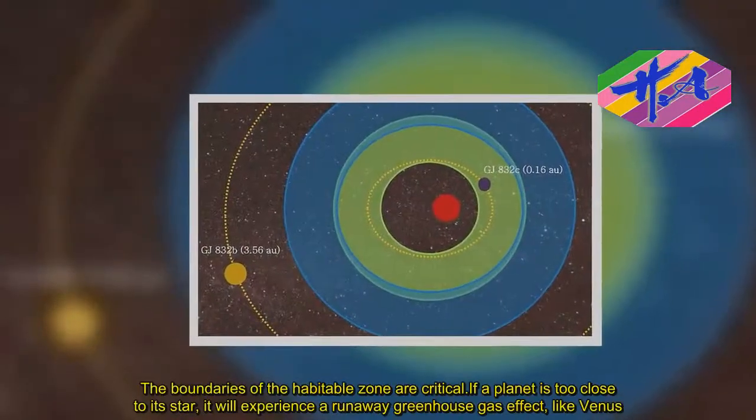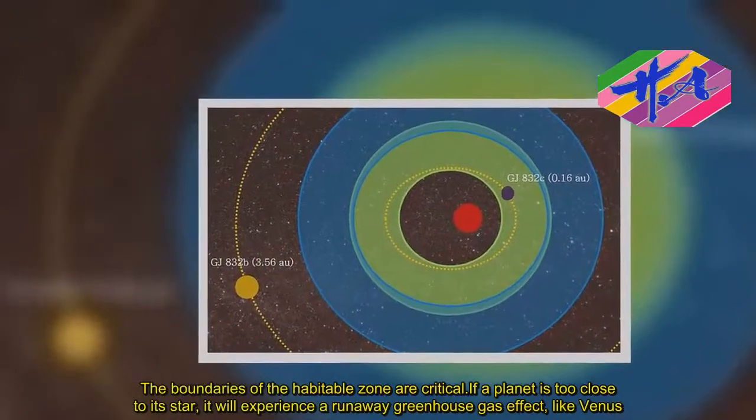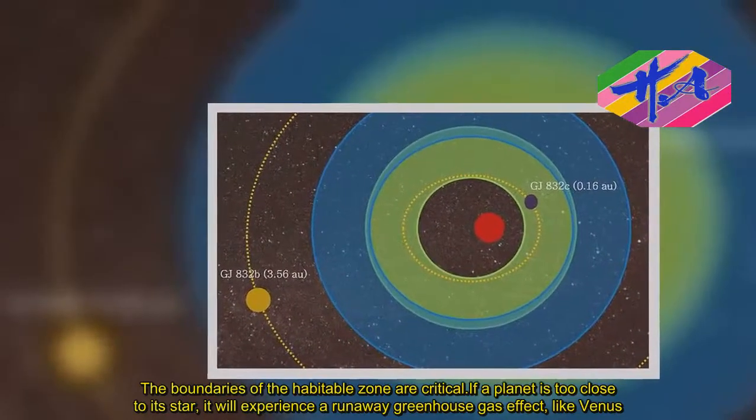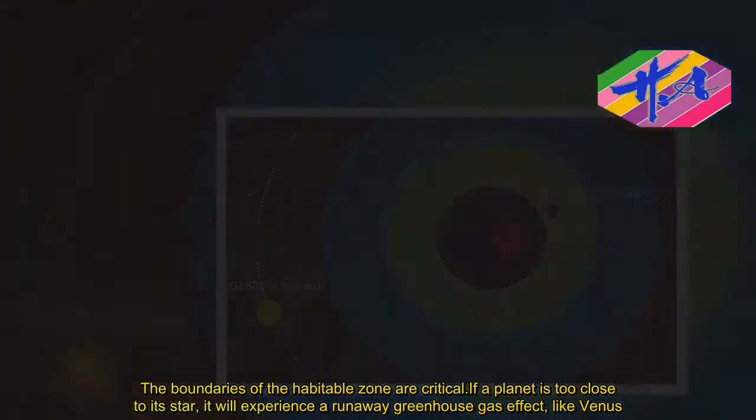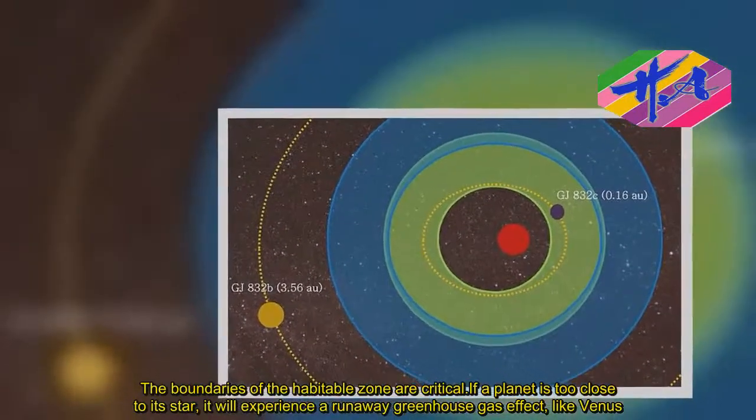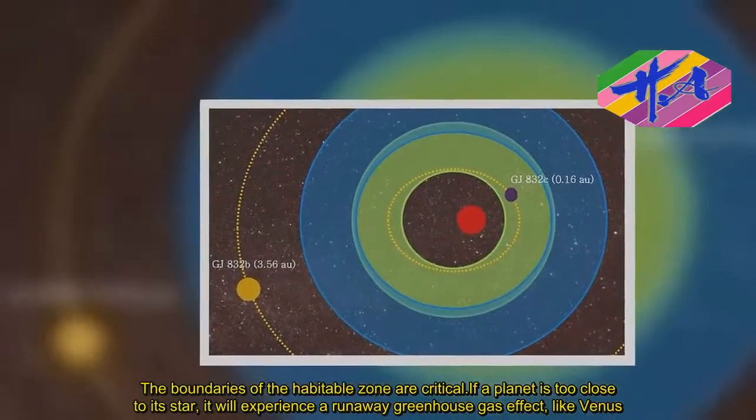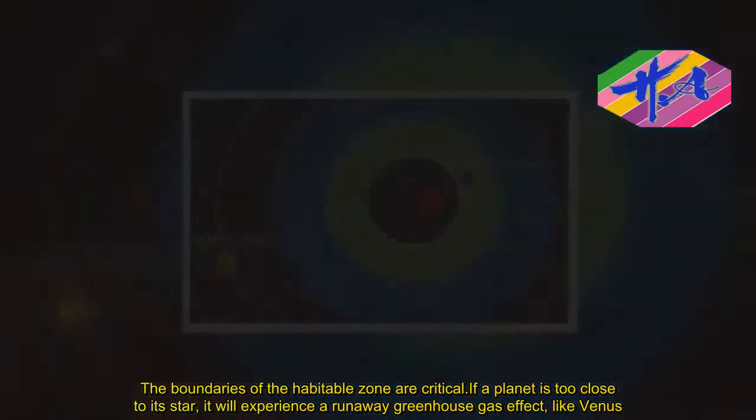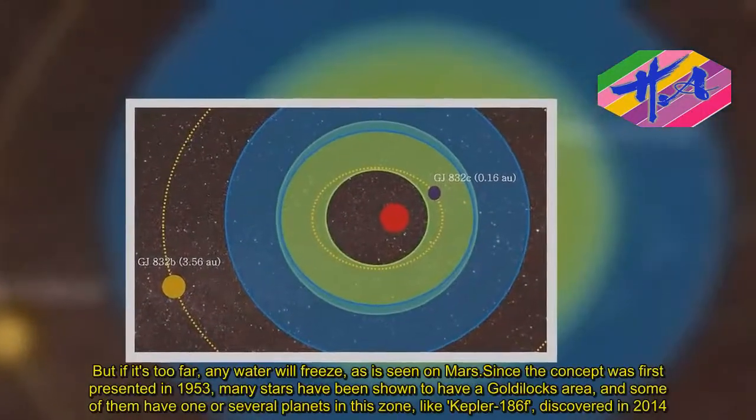The boundaries of the habitable zone are critical. If a planet is too close to its star, it will experience a runaway greenhouse gas effect, like Venus. But if it's too far, any water will freeze, as is seen on Mars.